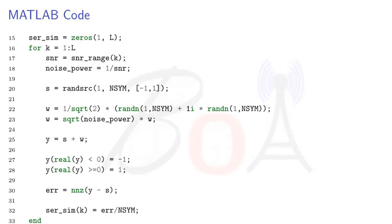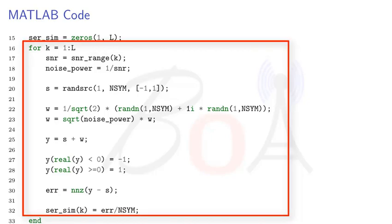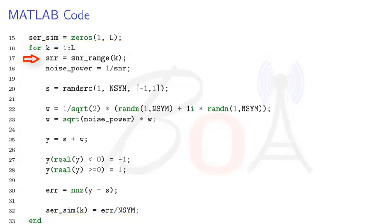Let us now start with Monte Carlo simulation. We first define a zero vector of length L. In this vector, we will store the symbol error rate value obtained via Monte Carlo simulation for each SNR. This is a for loop in which we will iterate through each of the SNR value and perform the Monte Carlo simulation. First, we pick the SNR value from the SNR range depending on loop index k.